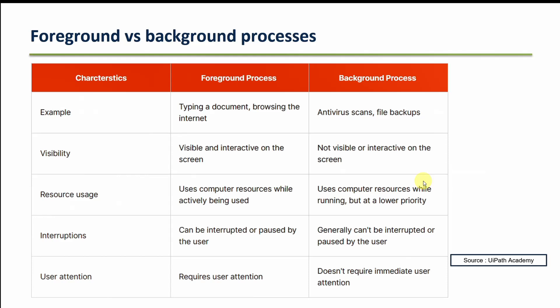Now in UiPath, when I talk about robots, these are the characteristics of foreground and background processes. Examples: typing into a document for foreground; antivirus scan, file backup for background. Regarding visibility, foreground processes are visible and interactive; background processes are not visible. For resource usage, foreground uses computer resources at higher priority.